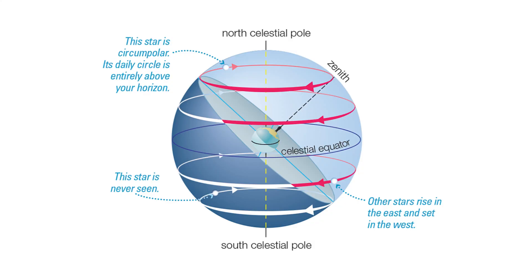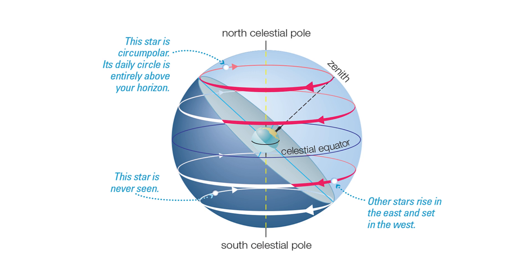Now Earth rotates from west to east, making the celestial sphere appear to rotate around us from east to west. So for the local sky at a location at 40 degrees latitude — this is going to be like California, Colorado, Pennsylvania, New Jersey, Italy, Greece, Turkey, China, North Korea, Japan, all those — the horizon slices through the celestial sphere at an angle to the celestial equator, causing the daily circles of stars to appear tilted in the local sky. This is essentially what we see: some stars stay above the horizon, always in our view, and some appear to rise and set.